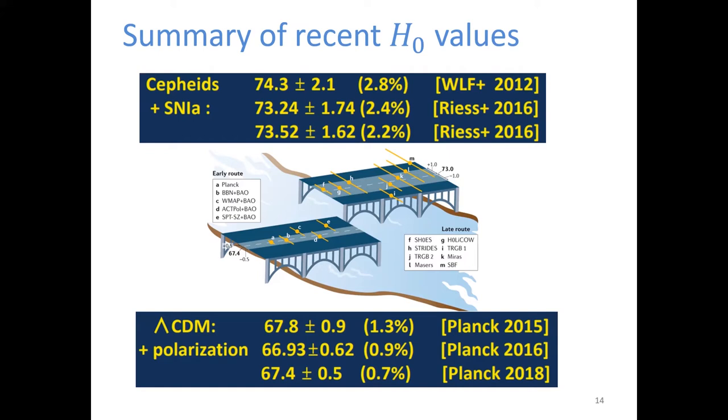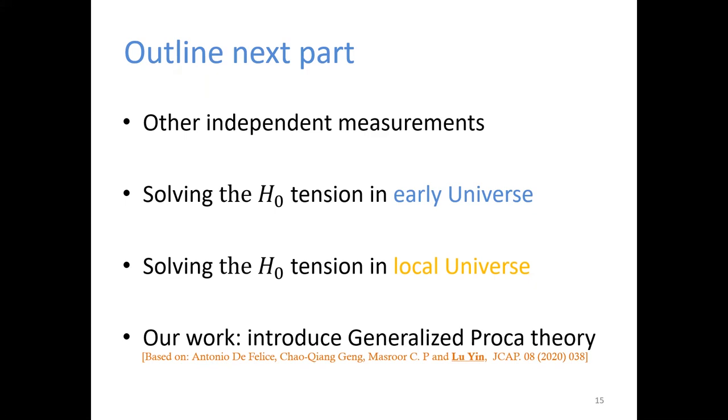The H0 result is given by local observation from supernova. This result is from high redshift CMB measurements. So the different measurements at high and low redshift gave incomparable results. The developing history of our universe is like a broken bridge, which seems a hint to new physics beyond the cosmological standard model. In the next, I will introduce the H0 result from other independent measurements, how to solve the H0 tension in early universe and in the local universe, and I will introduce our model, the generalized Proca theory to release the H0 tension.